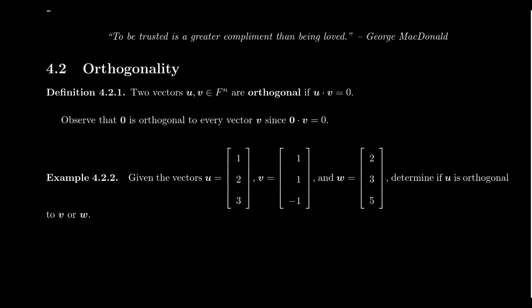We define what it means for two vectors to be orthogonal. If we have two vectors u and v inside of F^n, we say they're orthogonal if the inner product between the two vectors is zero. When we're talking about real vector spaces, this is representing the dot product. For complex vector spaces, we are talking about the Hermitian product.